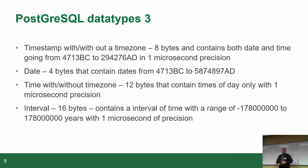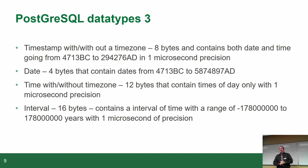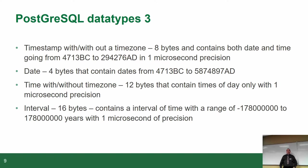You can store TIME without the date — just 3 p.m., for example — but it occupies 12 bytes, which is more than a timestamp. DATE is 4 bytes and goes from 4713 BC to 5 million AD. If you're still using this version of Postgres in 5 million AD, either they did something really right or something's gone horribly wrong.